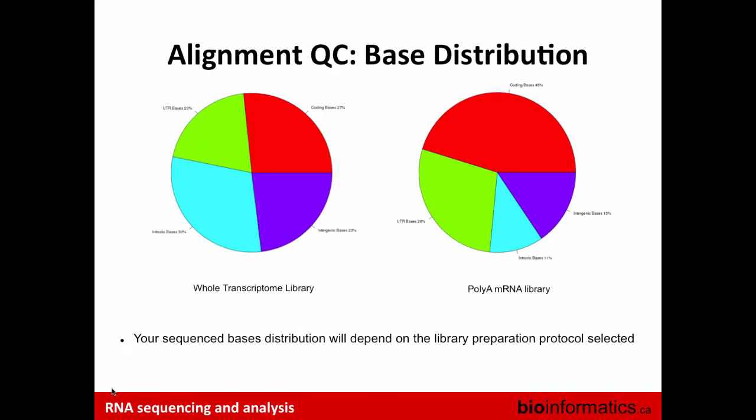Another important metric is base distribution — how many bases align to coding versus non-coding regions. Depending on whether your library construction used poly-A selection or whole transcriptome, the distribution will differ: poly-A gives more coding sequence, whole transcriptome gives less coding. It's important to check this distribution post-alignment, and if you're not getting the desired proportions, go back and reassess your library construction technique.